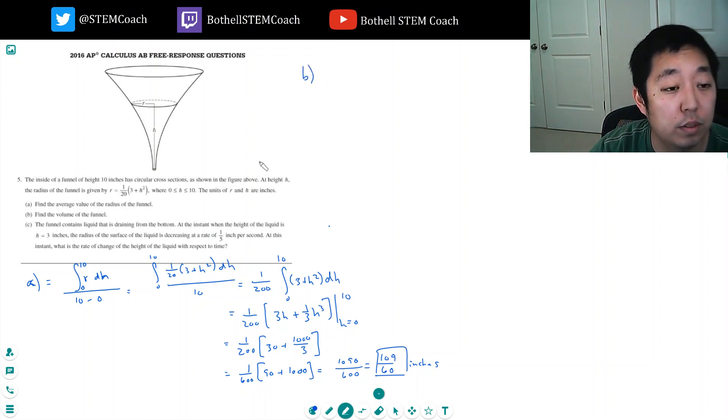Find the volume of the funnel. Okay. What I'm going to do is I'm going to cut it in the little disks. So like I'm going to slice it like this along the h direction. So this is dh. And I'm going to find the volume of one of the disks.